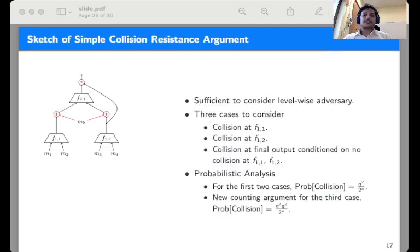Here it is sufficient to consider level-wise adversary. The reason is that the messages that are injected at the leaf node do not affect the transcript as the probabilities are calculated over the randomness of the function f as well as each of these functions f_i are random functions. Thus there are broadly two cases to consider: collision at the leaf node and collision at the final output conditioned on no collision of the leaf nodes.